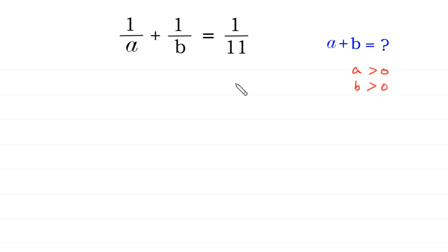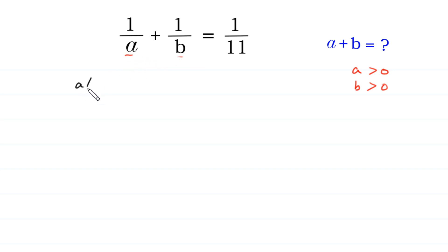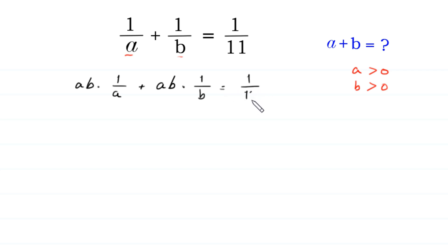First of all, we multiply both sides of this equation by the LCM of A and B. The LCM of A and B is AB. So we multiply both sides of this equation by AB, multiplying each term by AB: AB times 1 over A plus AB times 1 over B is equal to 1 over 11 times AB.